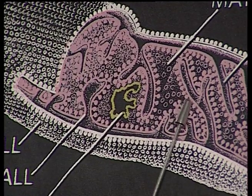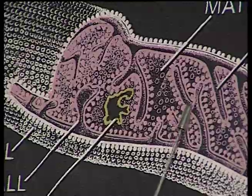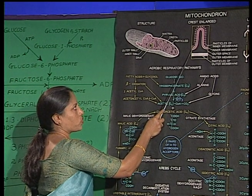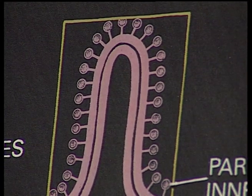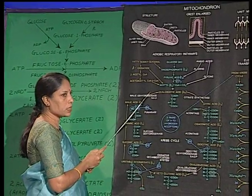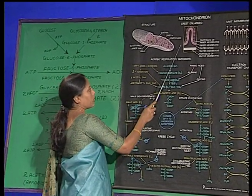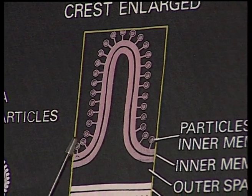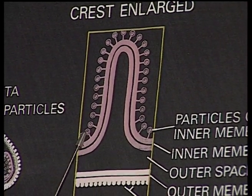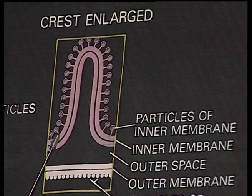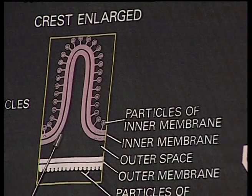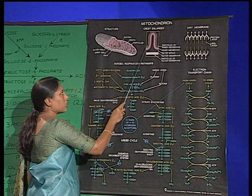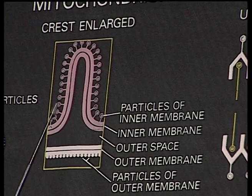If we observe the inner membrane on the M side — the matrix side — we find the presence of knob-like structures. They are known as elementary particles, F1 particles, or ETPs. The structure of these elementary particles is made up of three pieces: the base, the stalk, and the head region. The head-like structure is attached to the membrane by the stalk, which is 50 Angstroms in length, and the head is 100 Angstroms in diameter. These particles are placed at equidistance on this membrane.